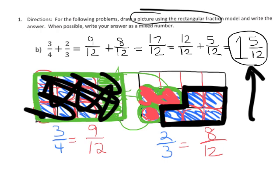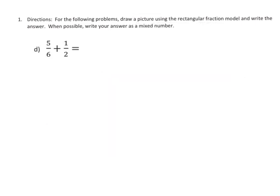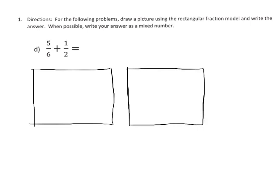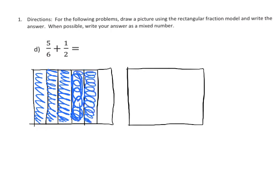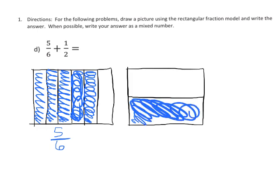Now we're going to do another practice: five-sixths plus one-half. I'm going to draw two identical rectangles and cut the first one into sixths, then shade in five-sixths — one, two, three, four, five, six — there's my five-sixths. And I'll cut this one in half; there's one-half.